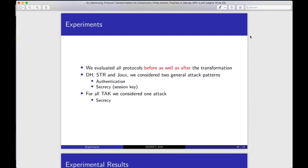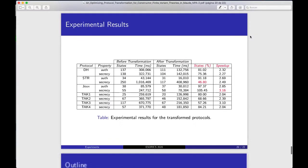We evaluate all the protocols before as well as after the transformation. The protocols Diffie-Hellman, Skinny3, and JOCKES, we consider two general attack patterns, the authentication, and the secrecy. For all versions of the TAC, we consider one attack, the secrecy. In this table, the most notable improvement is the Skinny3 secrecy, halving the number of the states, and the secrecy of the transformed version of the JOCKES is three times faster than the normal.